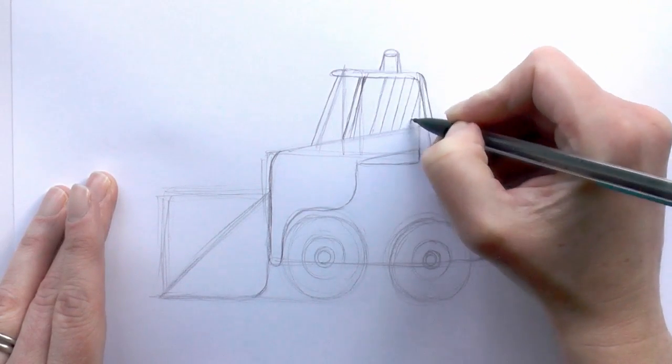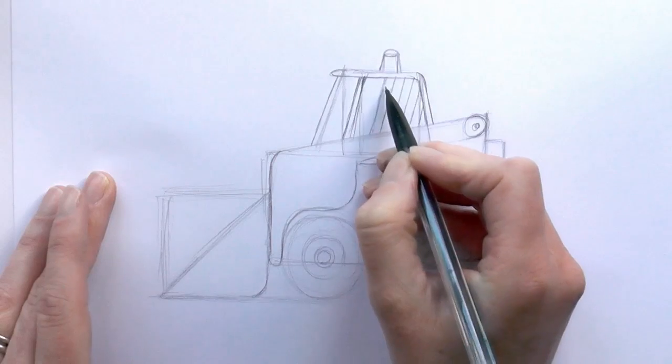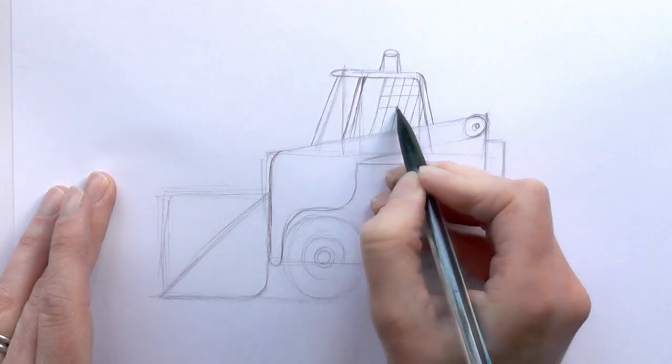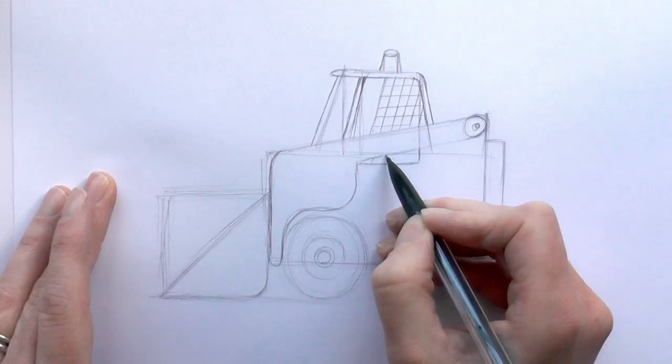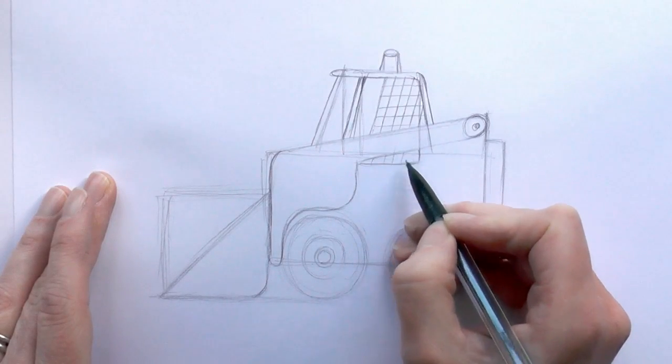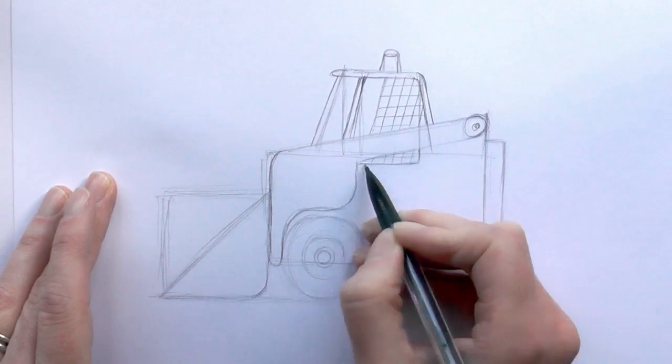And then run some lines across horizontally there. We'll just try and match those lines down here too. Bring that mesh down slightly more.